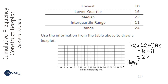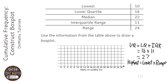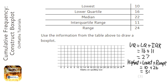For the highest value, we take the lowest value and add on the range, because the range is the highest take away the smallest. The lowest value is 10 and the range is 24, so the highest value is going to be 34.